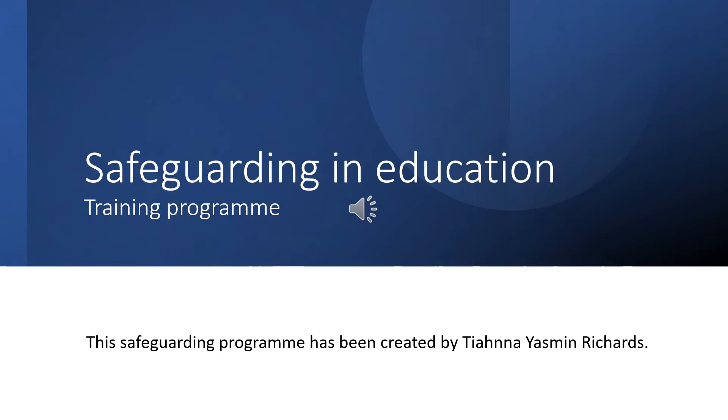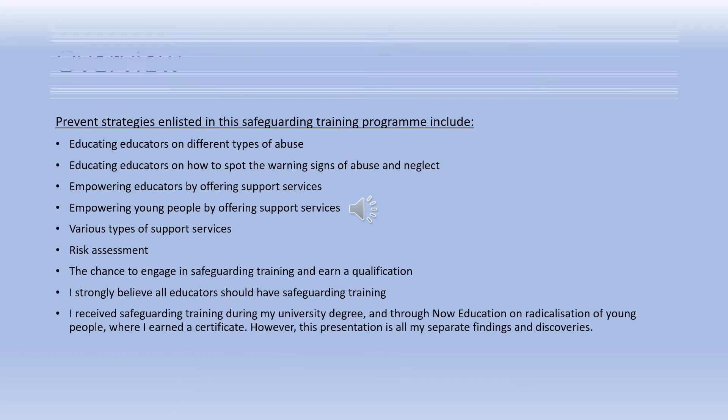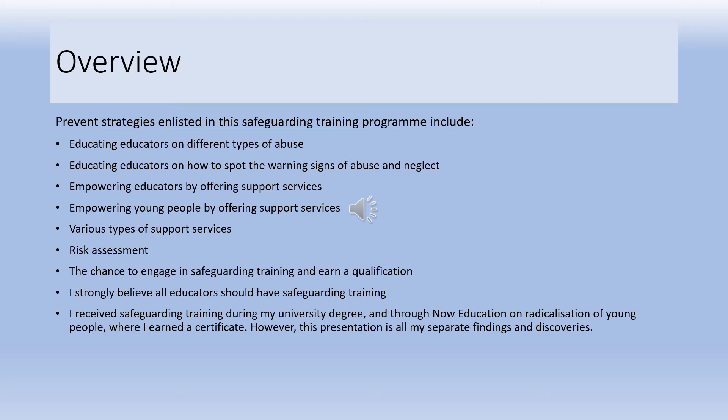Welcome to the Safe Garden training designed for teachers. An overview of the contents of the presentation: the Safe Garden program covers educators on different types of abuse and bullying, educating educators on how to spot warning signs, empowering educators to offer support services, advice and guidance both for themselves and for young people, offering risk assessment, and the opportunity to engage in Safe Garden training and get consultation.